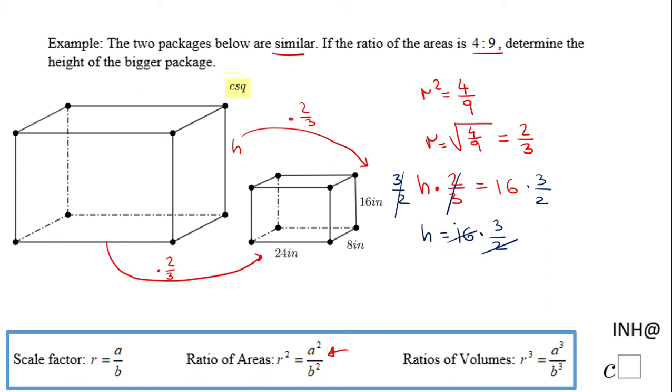And you have H equals 16 times 3 halves, and these two cancel with the two in the 16. It'll be 8, and 8 times 3 is 24.